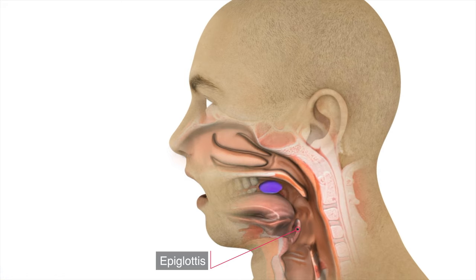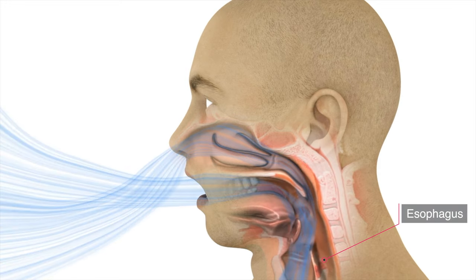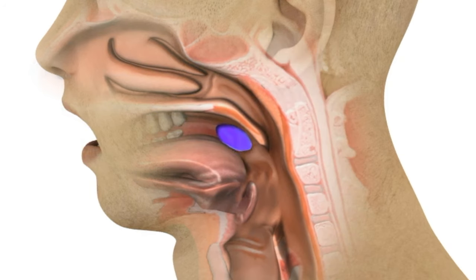During a normal swallow, the larynx elevates and moves forward and acts as a mechanical lever. This action causes the epiglottis to flip down over the tracheal entrance thereby protecting the airway and directing food or liquids into the esophagus for a normal swallow.